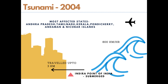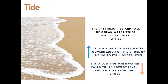Next, let's discuss tides. A rhythmic rise and fall of ocean water twice a day is called a tide. There are high tides and low tides. When water covers most of the shore by rising to its highest level, we call it a high tide. When water recedes from the shore and falls to its lowest level, we call it a low tide.